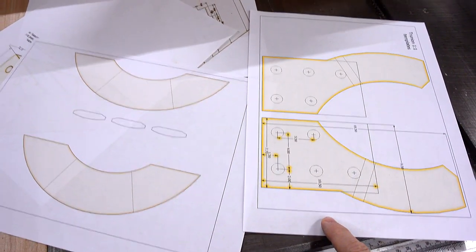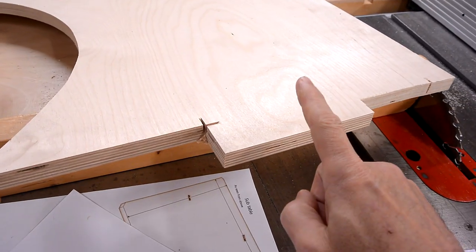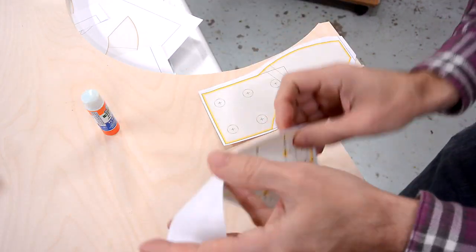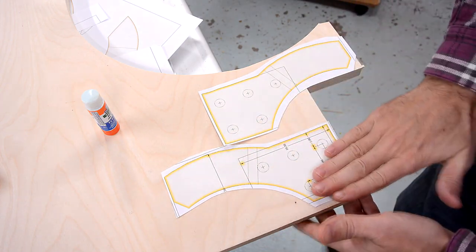I printed out some one-to-one templates, and I'm gonna cut these out of some Baltic Birch plywood. I'm always trying to nest the pieces as closely as possible in the wood that I've got, because this Baltic Birch plywood is not cheap.